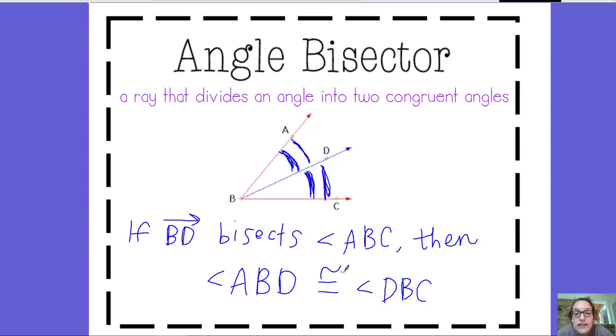So when they're congruent, we don't put the measure symbol. We just write the angle. So we could also say the measure of angle ABD is going to be equal to the measure of angle DBC. So if your angles are congruent, you don't put the measure. If your angles are equal, you do put the measure.